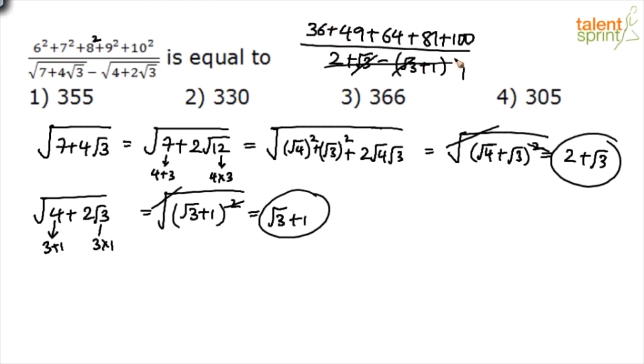Simplify the numerator: 36 and 64 is 100, plus 100 is 200, plus 81 is 281, plus 49 is 290, plus 30 is 330. Answer is 330, option 2.